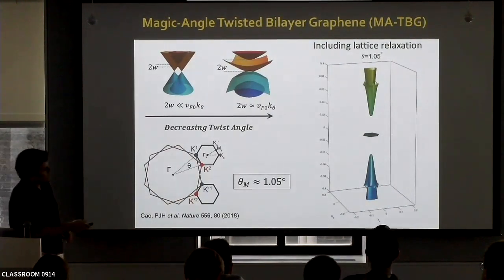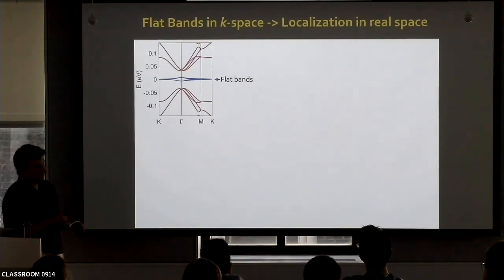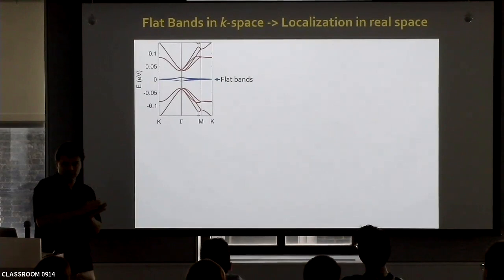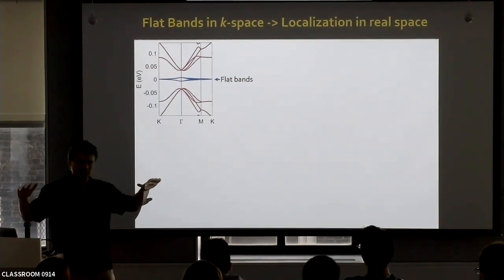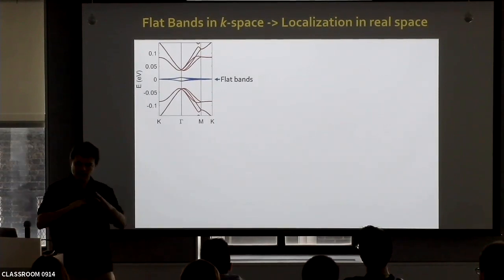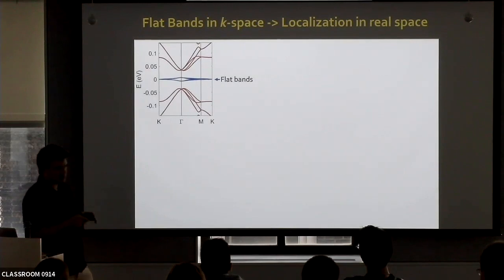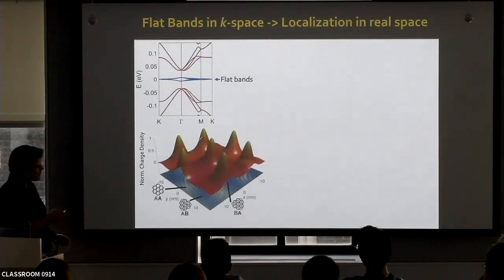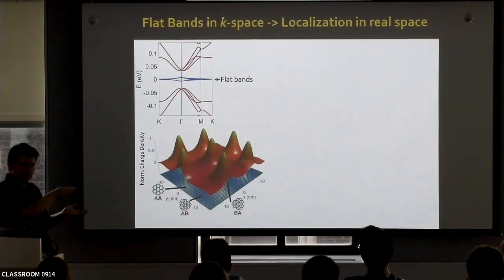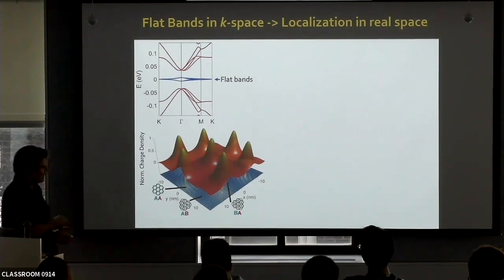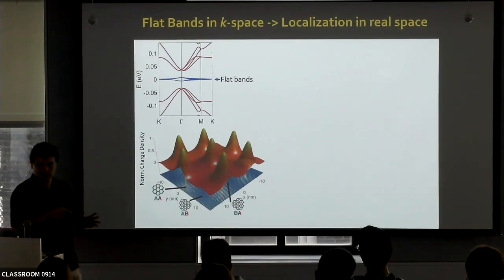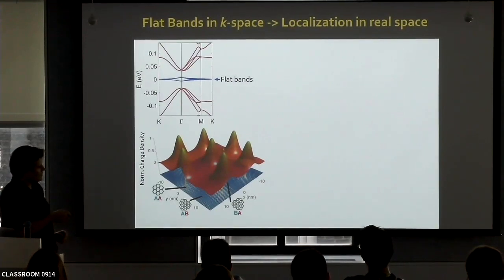The bands are flat but not perfectly flat — just much, much flatter than the graphene bands. Flat in momentum space means highly localized in real space. If you look at where the electrons in these flat bands like to sit, they like to sit in spots where the local stacking between the two graphene sheets is AA — where locally, all of the carbon atoms in one layer are on top of the carbon atoms in the bottom layer. These AA stacking regions are separated from AB and BA stacking regions, which are tunneling-coupled to the AA regions, giving the bands a little bit of curvature.